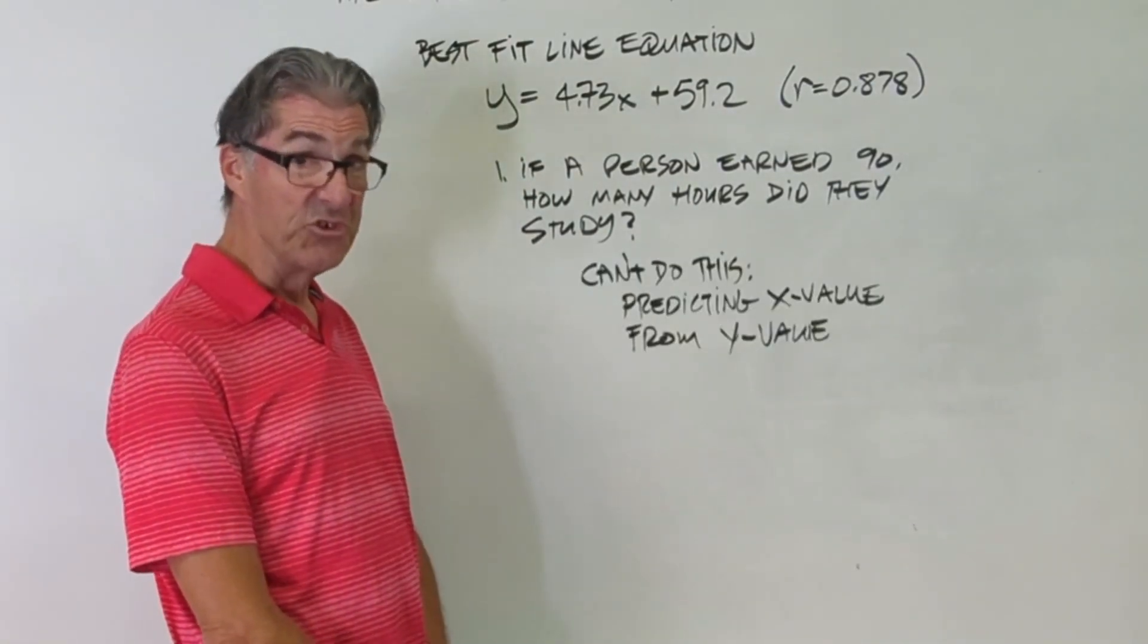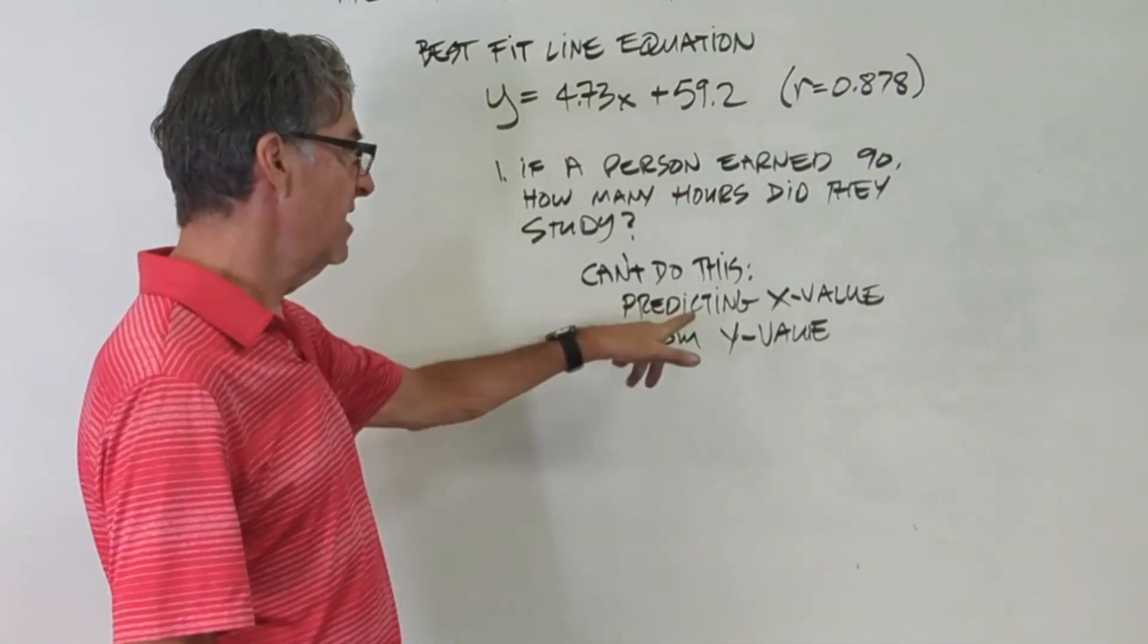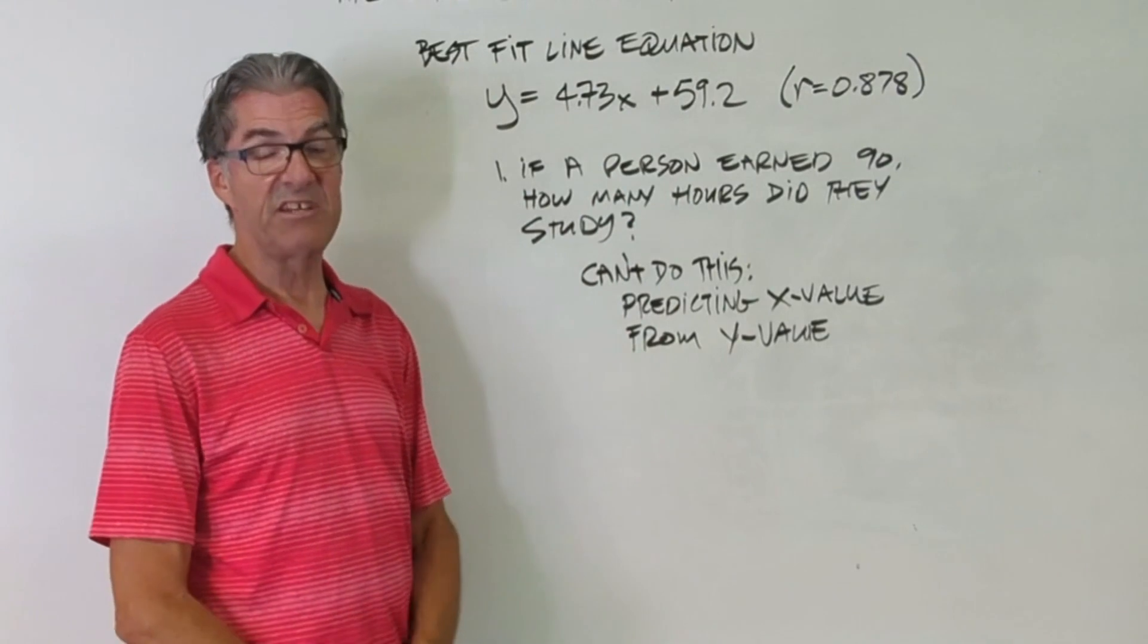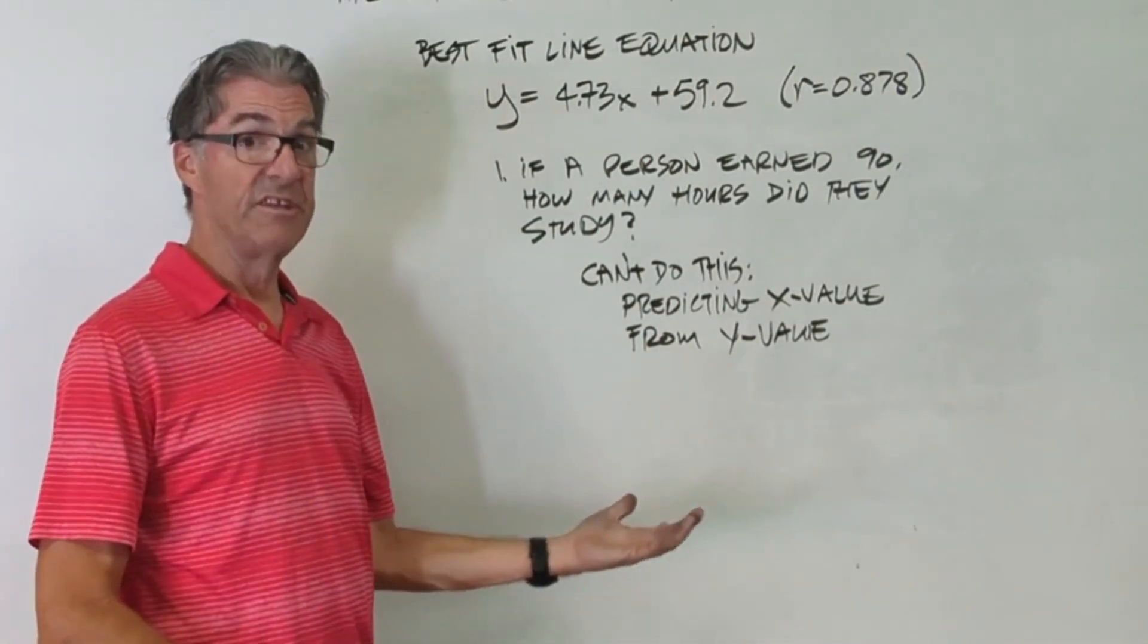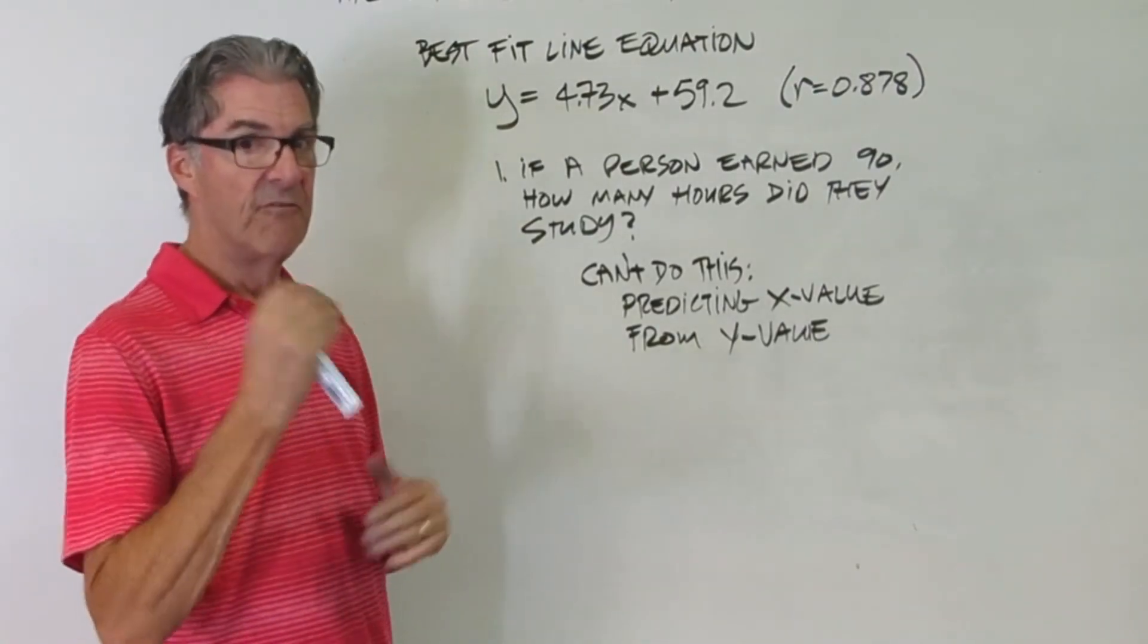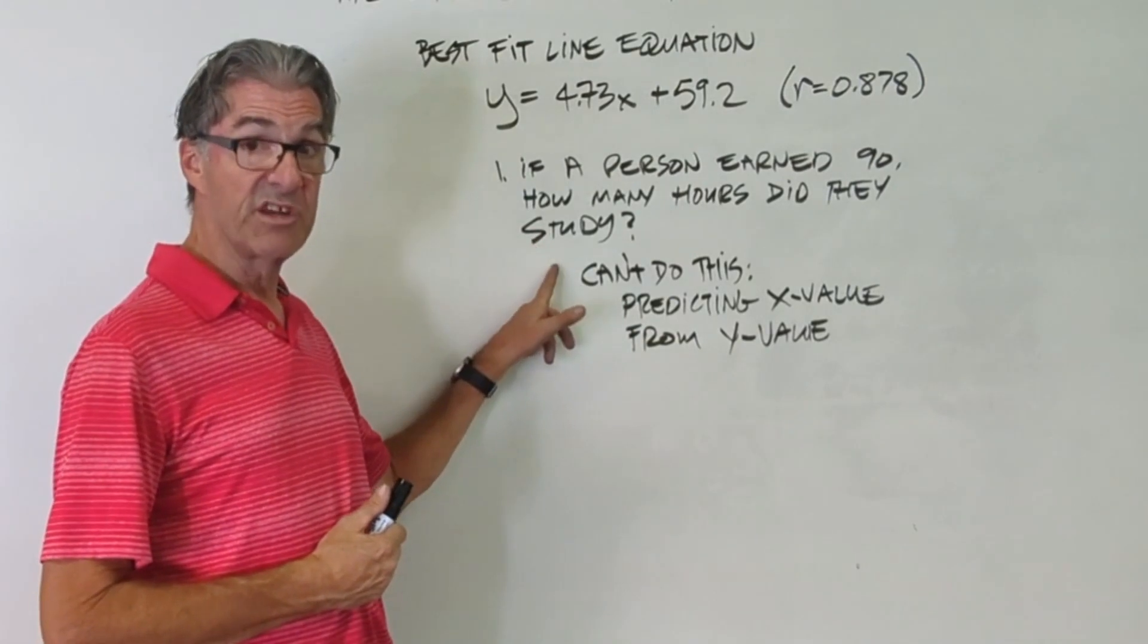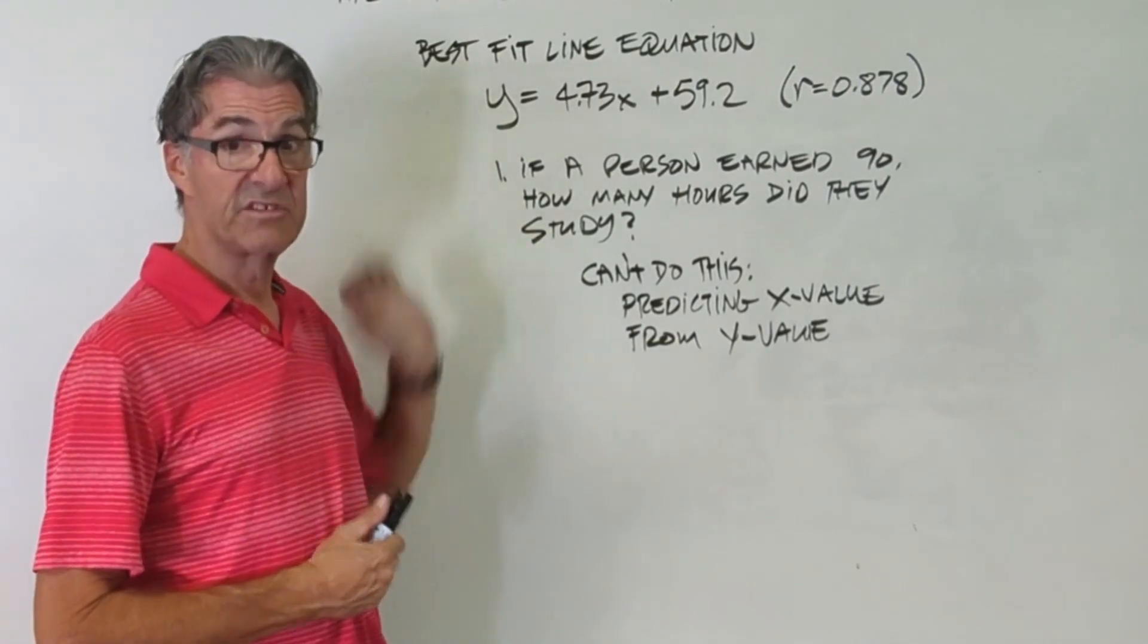All right, if you caught that you can't do this one, you're right good on you. We can't do it because this is asking us to predict the x value given the y value. And you'll remember that was one of the conditions. You have to go from x to y, from the independent to the dependent variable. So this is not a prediction that we make in this situation.